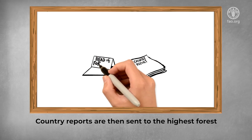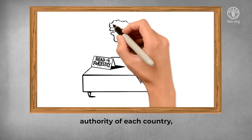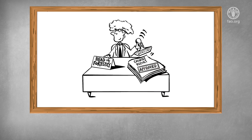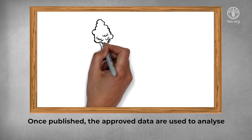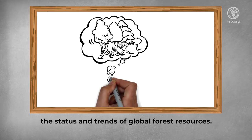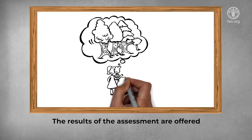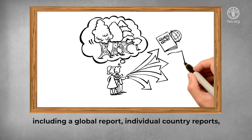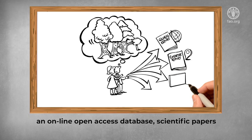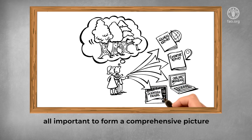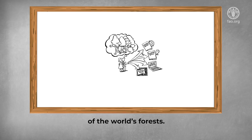Country reports are then sent to the highest forest authority of each country, the head of forestry, for their final approval. Once published, the approved data are used to analyse the status and trends of global forest resources. The results of the assessments are offered to the public in a number of formats, including a global report, individual country reports, an online open access database, scientific papers and other summary outputs, all important to form a comprehensive picture of the world's forests.